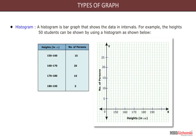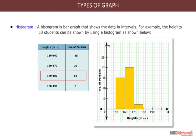There are 15 persons having the height between 150 cm and 160 cm, while 20 persons are having the height between 160 cm and 170 cm. Also, 10 persons are having the height between 170 cm and 180 cm, and only 5 persons are having the height between 180 cm and 190 cm.